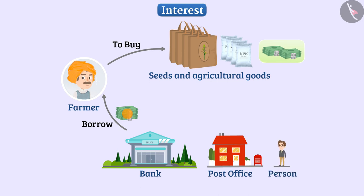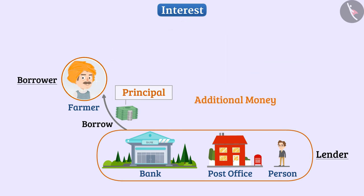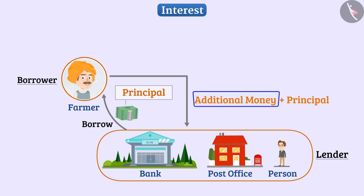The amount borrowed or lent to us is called the principal. The lender and the borrower agree on certain conditions, such as the amount of additional money to be returned along with the principal at the time of returning. We call this extra money as interest.